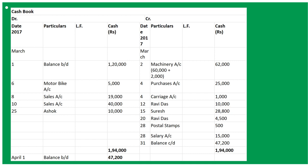On March 10: sold goods for Rs. 40,000, so it will be To Sales Account March 10: 40,000. On March 15: bought goods from Suresh with cash discount of 4%, goods worth 30,000. Calculate 4% of 30,000 which is 1,200, so By Suresh Account with the net amount after deducting discount.